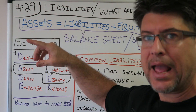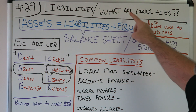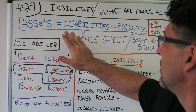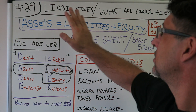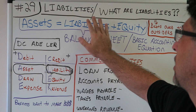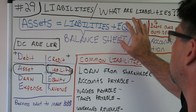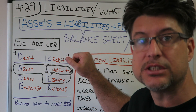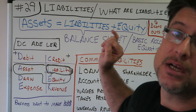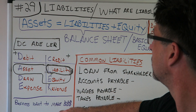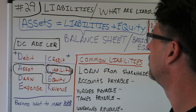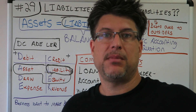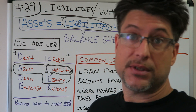AFB number 29 for beginners — liabilities. What are liabilities? Let's start with the balance sheet basic accounting equation: assets equal liabilities plus equity. This is the mainstay of accounting. It's the basic equation, it's the balance sheet — the most important financial statement as far as I'm concerned. Today we are concerned with liabilities.